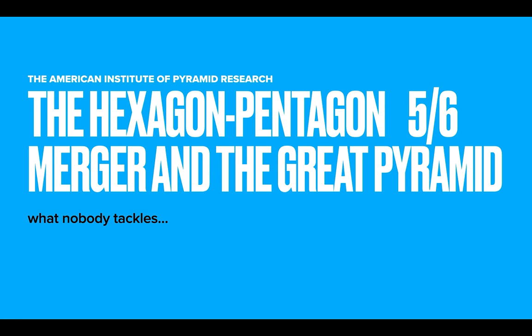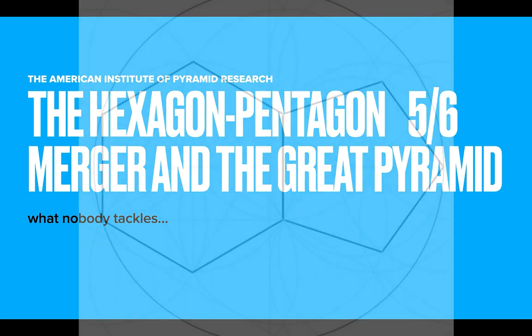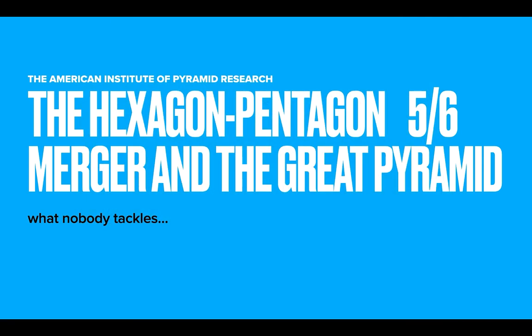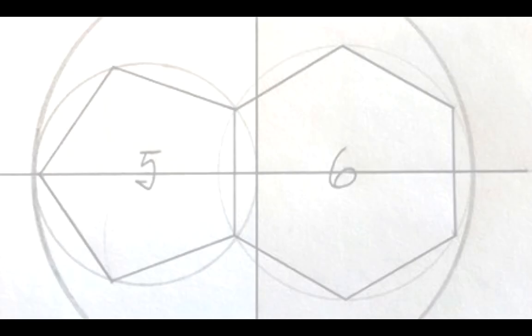Well thanks for joining us. We're looking at the hexagon-pentagon merger and the Great Pyramid. These two polygons with five sides and six sides are ancient in terms of their meaning. So what's their relationship with the Great Pyramid?